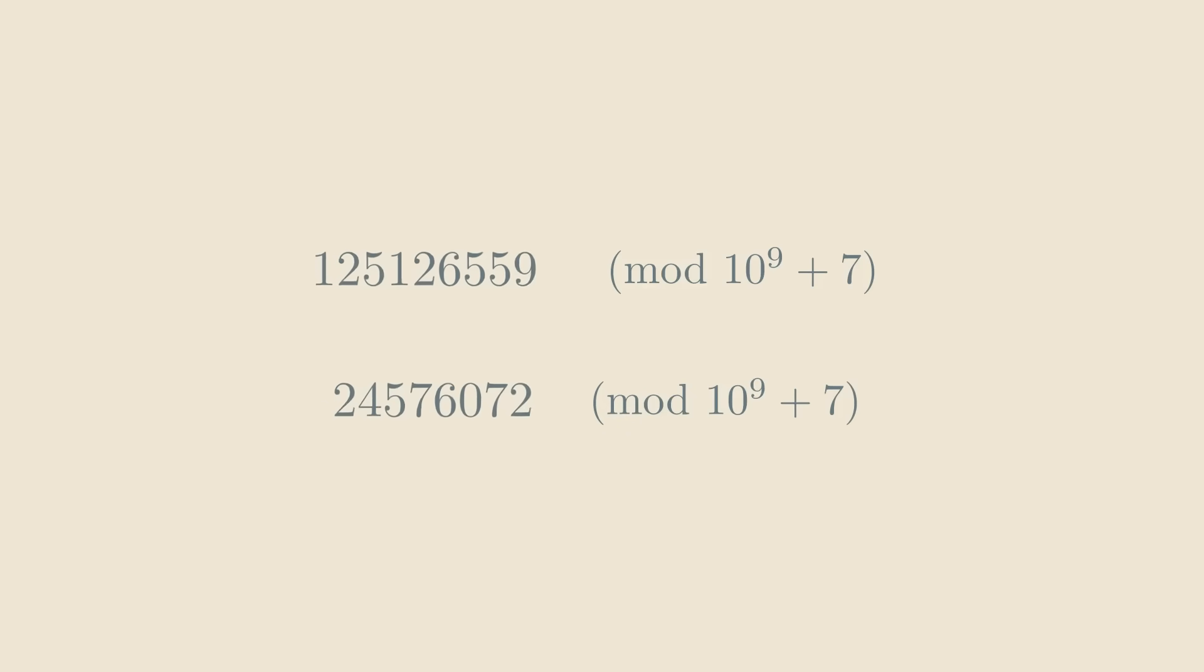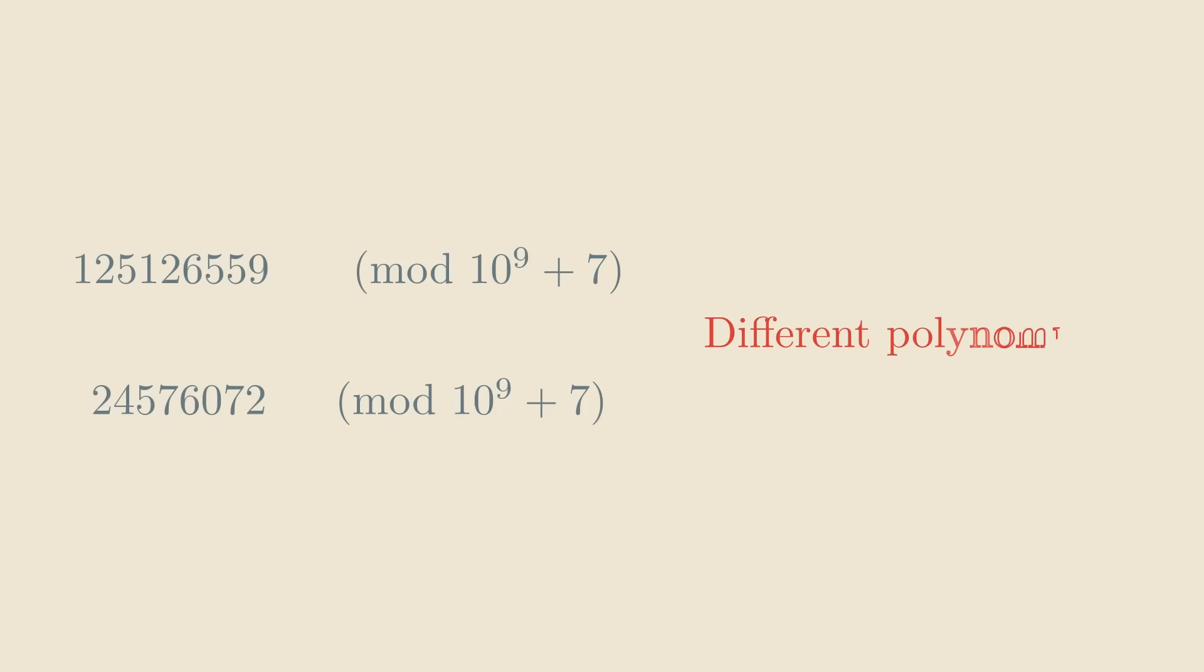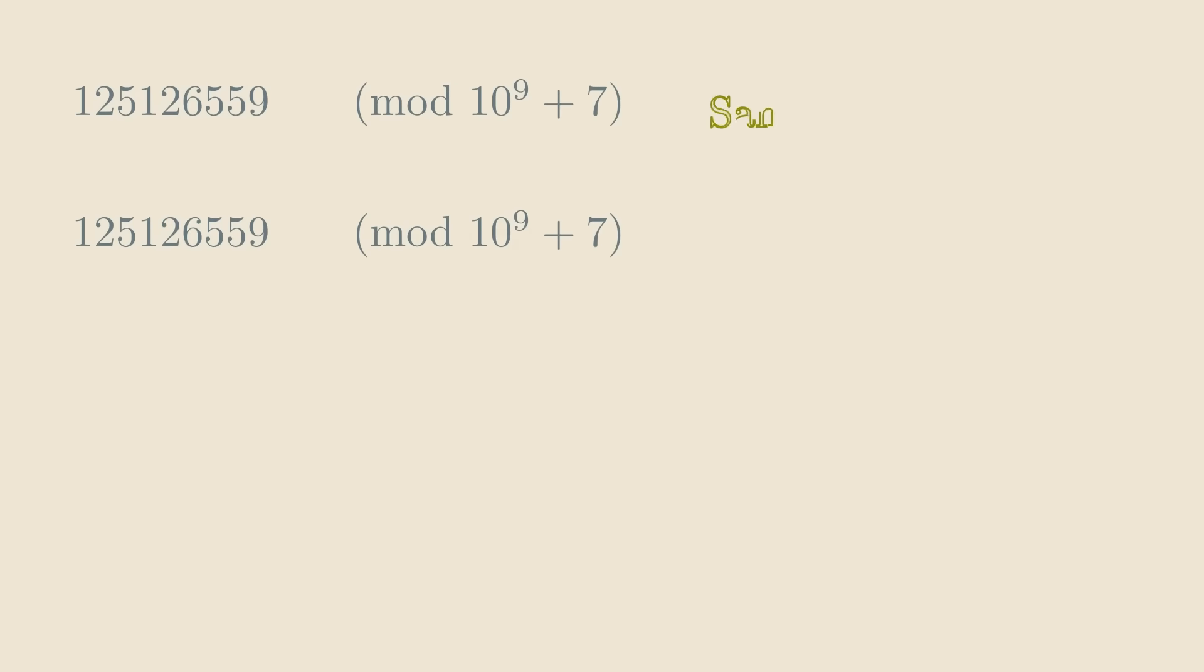In this example, the two results we got are different, meaning that the two expressions clearly don't correspond to the same polynomial. But what if the two results happen to be the same? Then we can be quite confident that the two expressions are equivalent. But it's only a probabilistic statement.